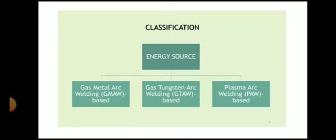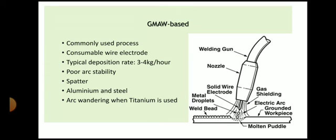You can classify wire arc additive manufacturing based on the heat source. The first heat source is GMAW — gas metal arc welding process — and cold metal transfer welding is a modified process of GMAW. The second method is GTAW — gas tungsten arc welding process. And the third is plasma arc welding, PAW. With these three processes you can deposit the material using wire arc additive manufacturing. Now we will discuss each method in detail.